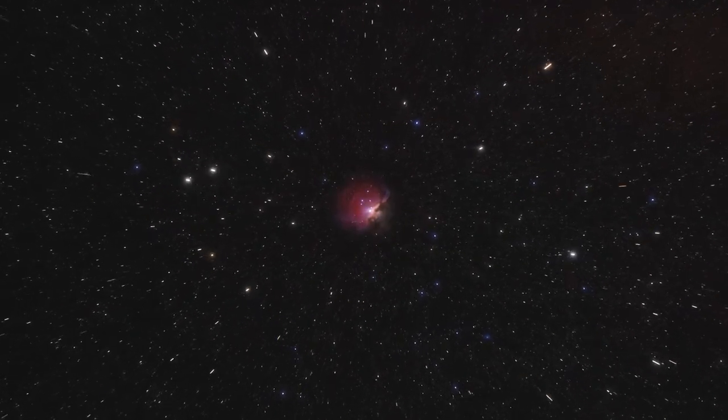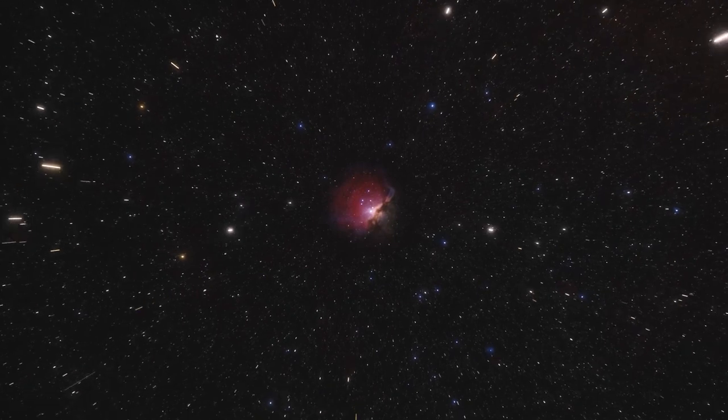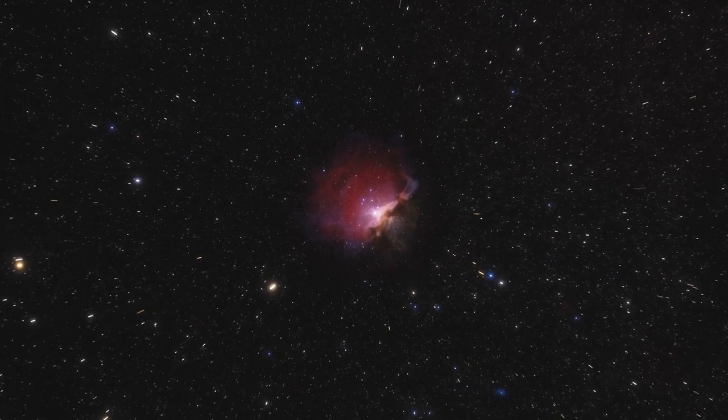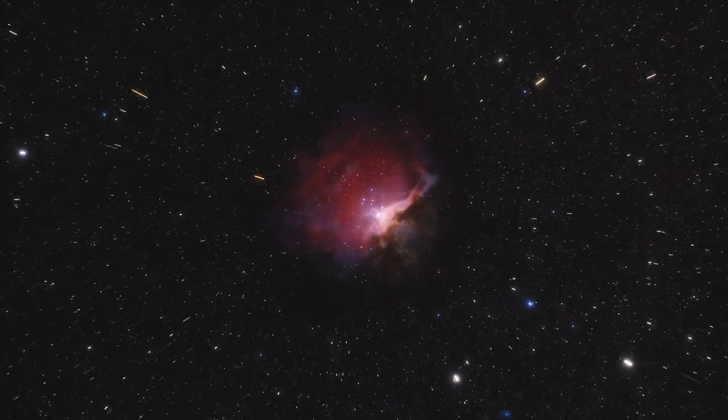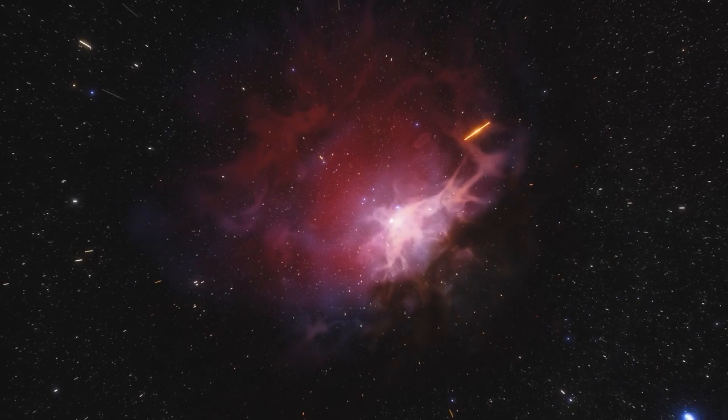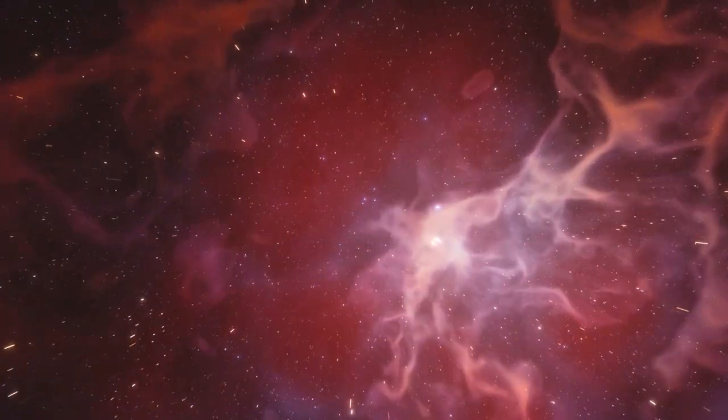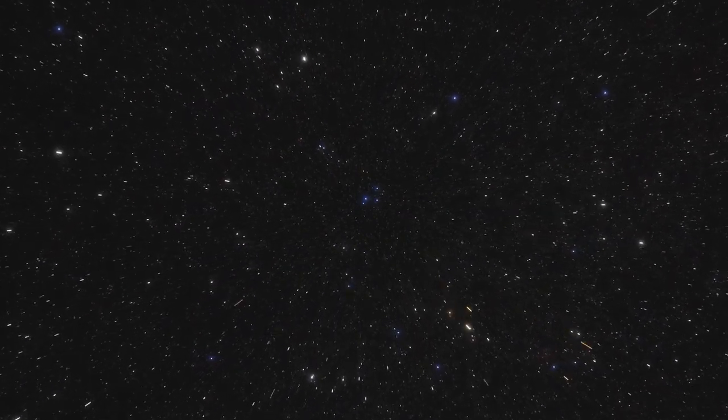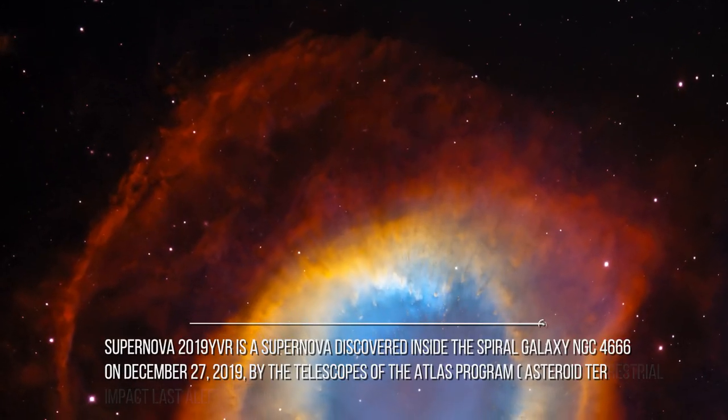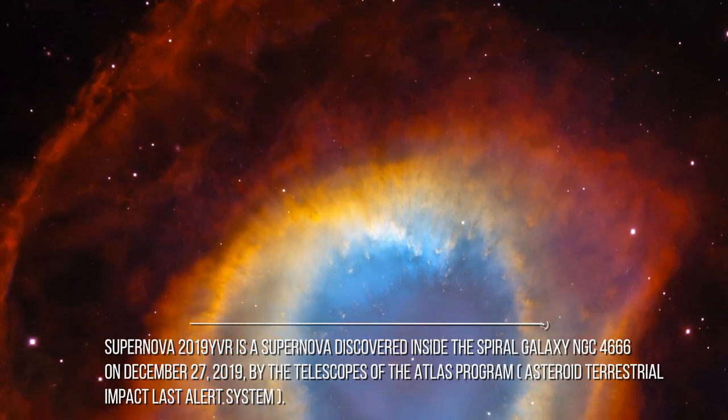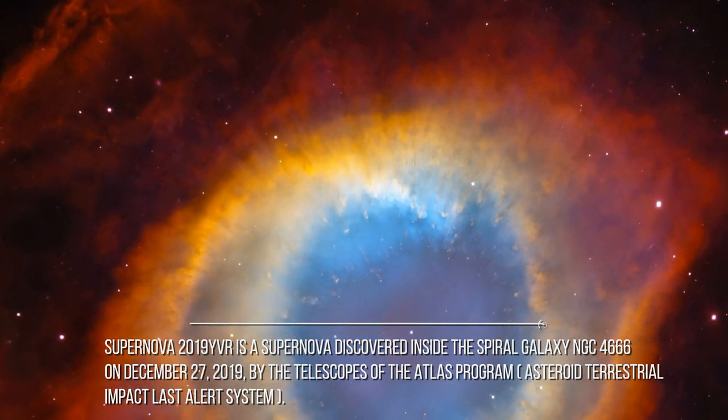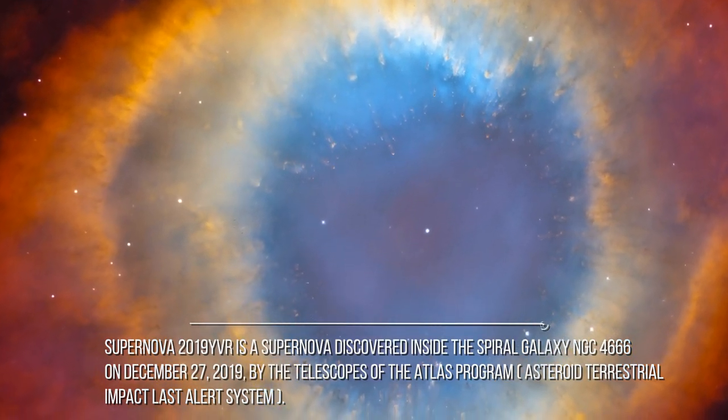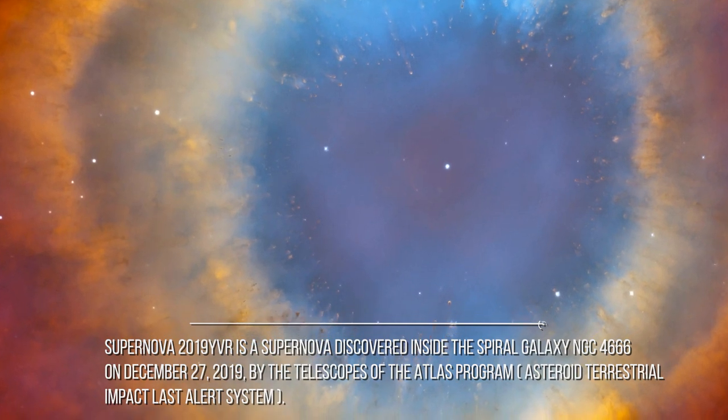This is the case of the supernova 2019 YVR and its candidate parent star, a yellow supergiant observed two-and-a-half years apart by Charles Kilpatrick, a researcher at the Center for Interdisciplinary Exploration and Research in Astrophysics of Northwestern University, and his colleagues. Supernova 2019 YVR is a supernova discovered inside the spiral galaxy NGC-4666 on December 27, 2019, by the telescopes of the ATLAS program.